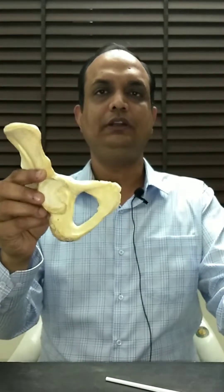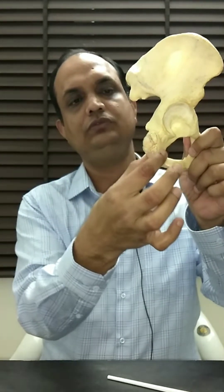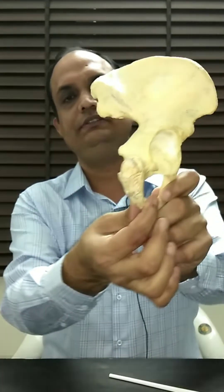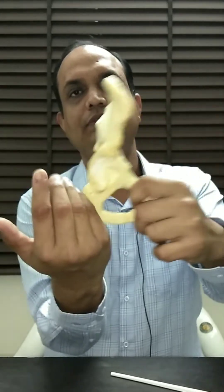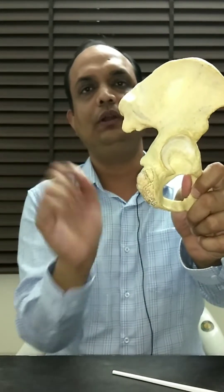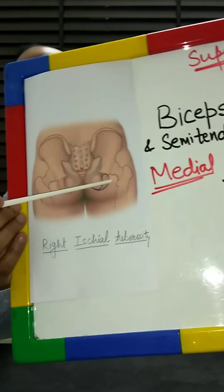Today we will talk about the ischial tuberosity and muscles attached on it. This is the right side of the hip bone. The ischial tuberosity narrows down as you go from above downward, and it is divided vertically into two halves — the outer half and the inner half — and then further into upper and lower parts.